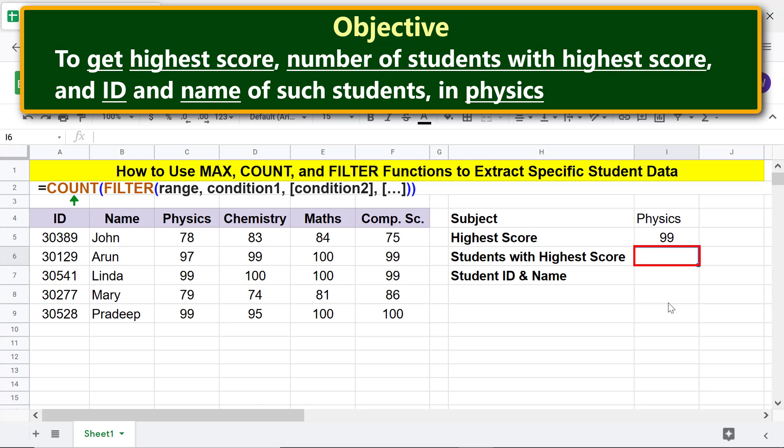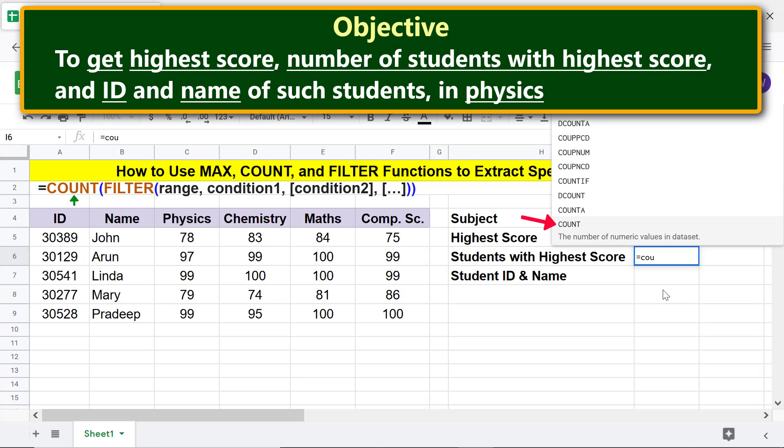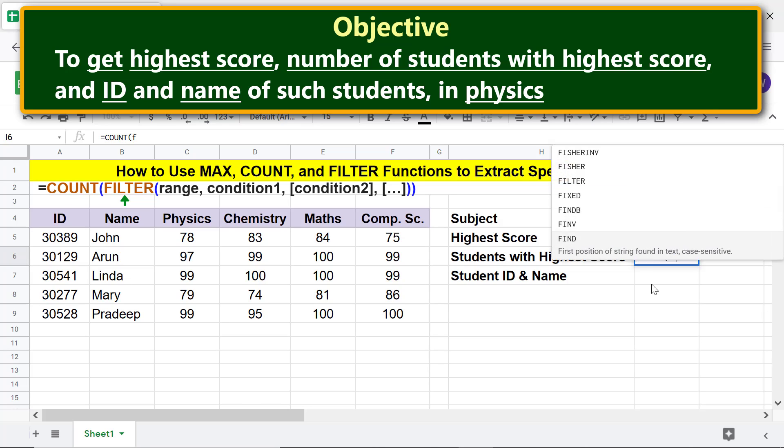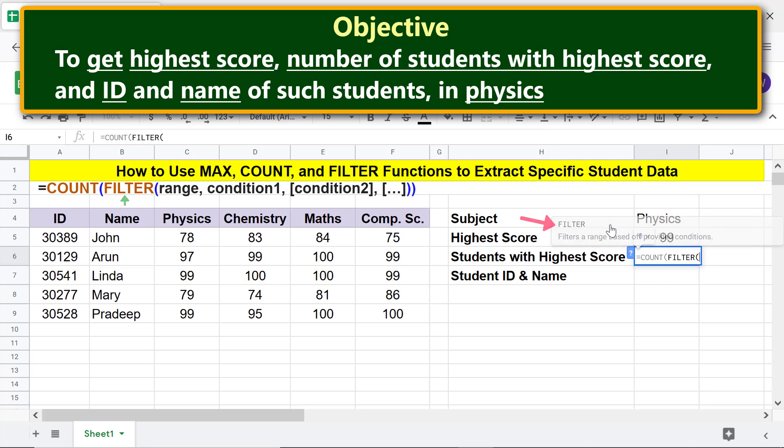All right, type equals C-O-U and select COUNT. Now we will nest the FILTER function. Type F-I-L and select FILTER. For range, select this area. Note that we want to extract only the physics marks column.